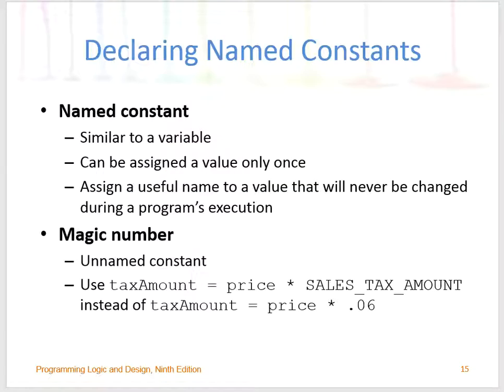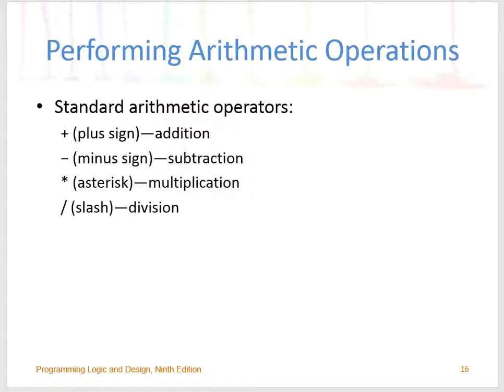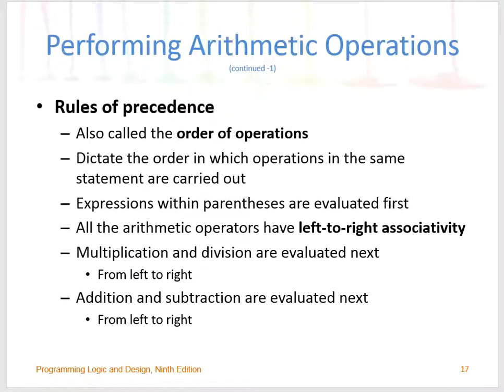Moving forward for constants — they are very important because if there is a given number in your program, you don't want to type it over and over. An example of a constant would be a discount, say 20% discount. A constant is similar to a variable, but it can be assigned a value only once and will never change during the execution of your entire program. I'm going to show you how to use a constant as we move forward.